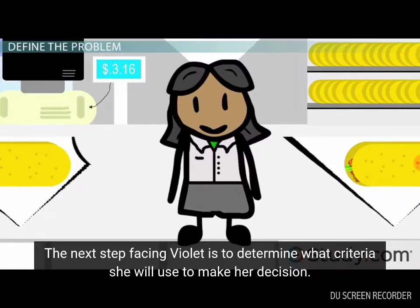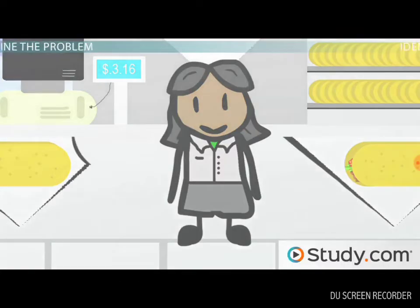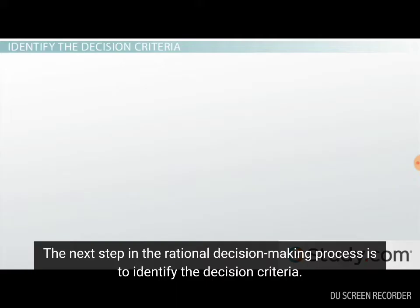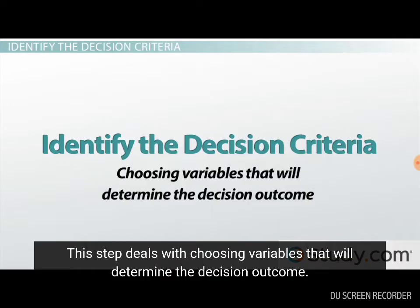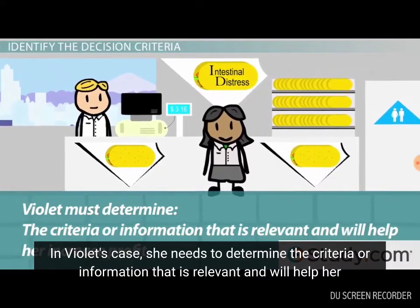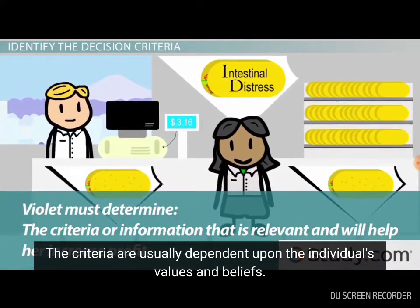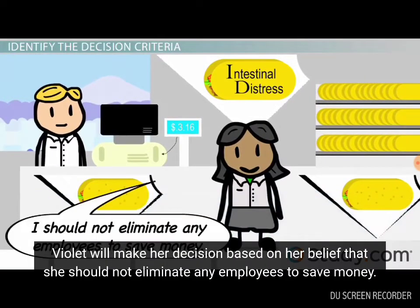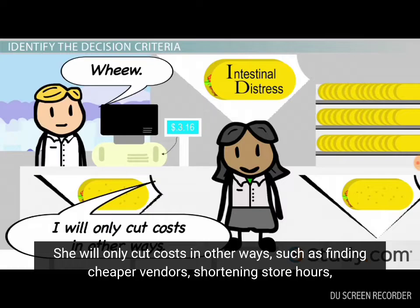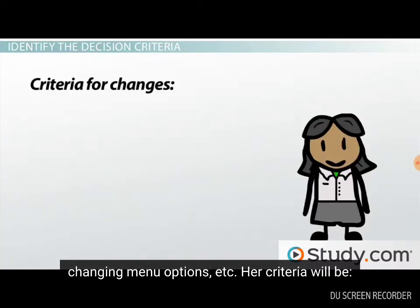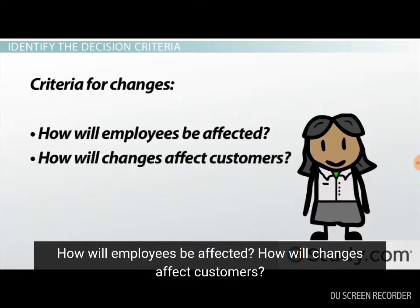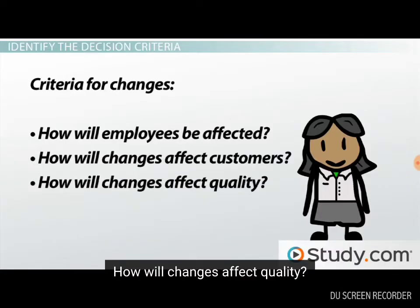The next step facing Violet is to determine what criteria she will use to make her decision. This step deals with choosing variables that will determine the decision outcome. In Violet's case, she needs to determine the criteria, or information that is relevant and will help her increase her profit. The criteria are usually dependent upon the individual's values and beliefs. Violet will make her decision based on her belief that she should not eliminate any employees to save money. She will only cut costs in other ways, such as finding cheaper vendors, shortening store hours, or changing menu options. Her criteria will be: how will employees be affected, how will changes affect customers, and how will changes affect quality.